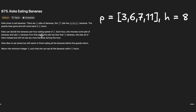Today's problem is Koko Eating Bananas. Coco loves to eat bananas. There are n piles of bananas, and the i-th pile has piles[i] bananas. The guards have gone and will come back in h hours. Coco can decide her per-hour eating speed of k — this k is the minimum value we need to find and return. Each hour she chooses some pile and eats k bananas from it.